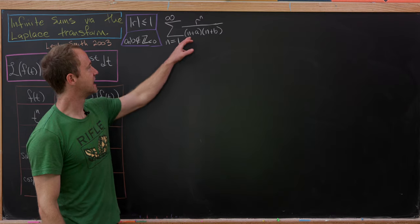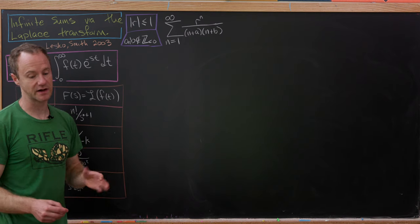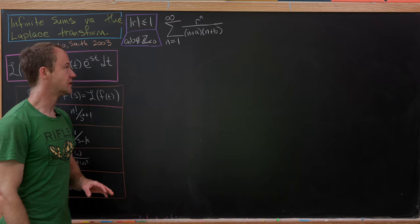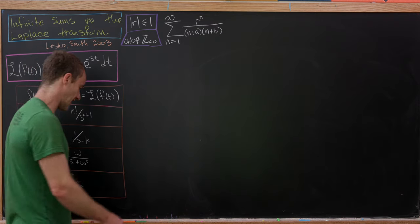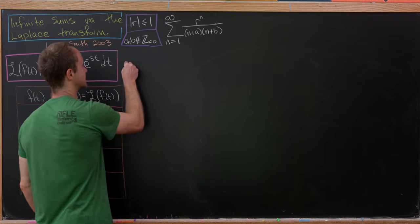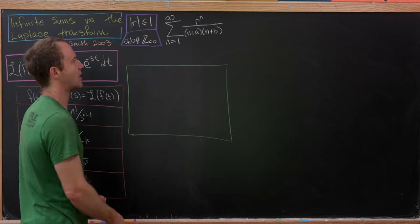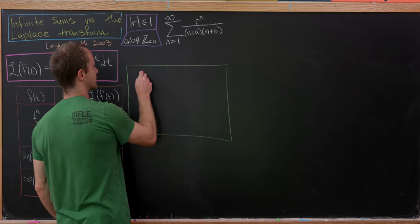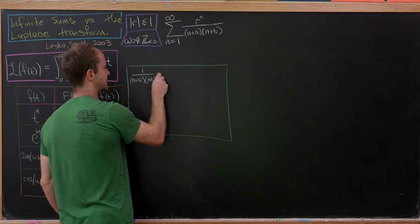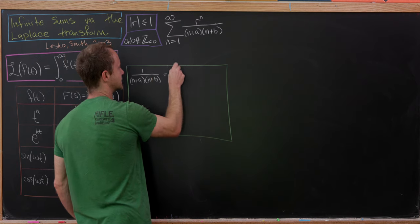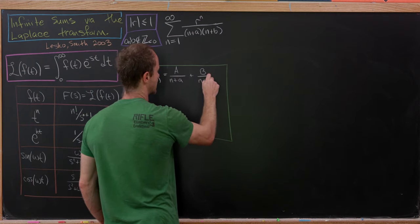If a or b were negative integers, we would have cancellation in the denominator at some point, which would be bad. Our first strategy will be to take (n plus a)(n plus b) in the denominator and rewrite it using a partial fraction decomposition. Leaving off the r to the n, we decompose 1 over (n plus a)(n plus b) into capital A over (n plus a) plus capital B over (n plus b).